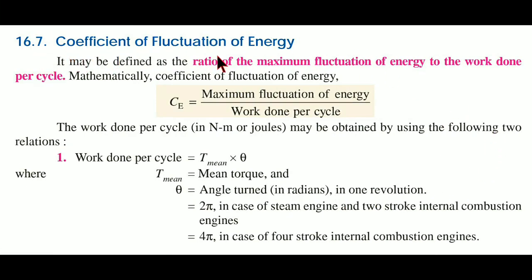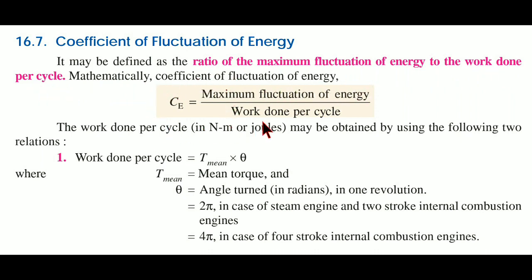The next topic is the coefficient of fluctuation of energy. It may be defined as the ratio of the maximum fluctuation of energy to the work done per cycle. Mathematically, coefficient of fluctuation of energy CE is equal to maximum fluctuation of energy divided by work done per cycle.